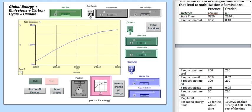now we're going to turn on the coal and the oil switches. The F reduction of coal, the time is going to be 2020. We're going to make the time 200 years. So that's down here. We're going to reduce it by 0.12.